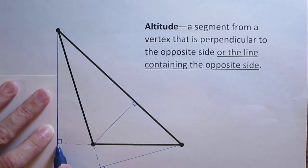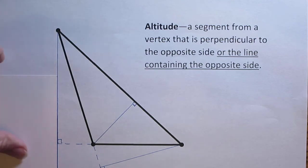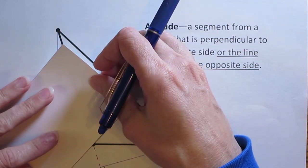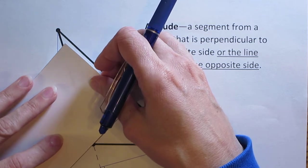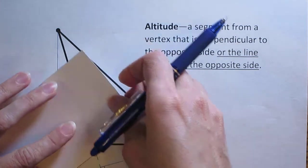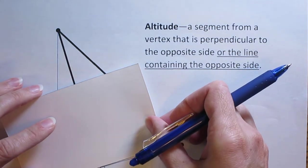So with the note card I'm going to extend the lines for each of the altitudes. Extend that second altitude and then that third one.